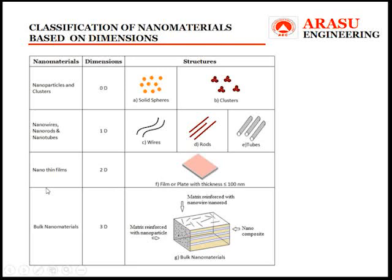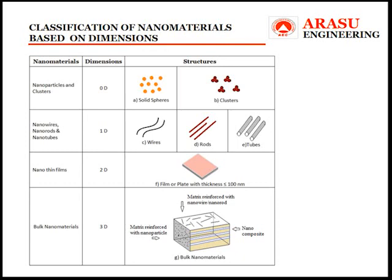Next we have nano thin films, which are two-dimensional structures with surface extension in the x and y directions — sometimes called nanosheets with negligible thickness. Then we have bulk nanomaterials, usually in combination with any of the above nanomaterials, taking a three-dimensional structure. Examples include a matrix reinforced with nanowires, nanoparticles, or nano laminates as a sandwich in the bulk material. These bulk nanomaterials are popular for developing vehicle structures with light weight and high strength.